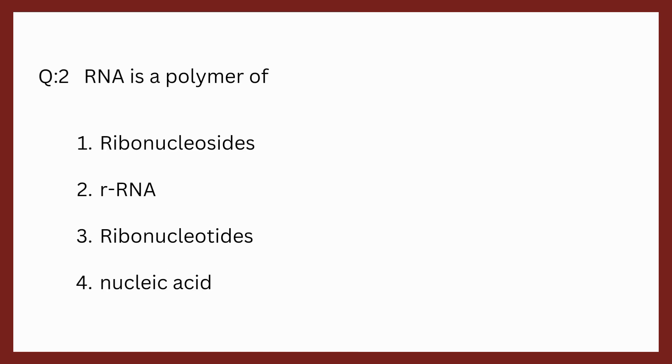Question 2. RNA is a polymer of options: ribonucleoside, r-RNA, ribonucleotide, nucleic acid. RNA is a polymer of ribonucleotide because multiple ribonucleotides mix and form RNA. We know that RNA is also called ribonucleic acid and it is formed of nucleotide plus ribose sugar. The correct answer is ribonucleotide.